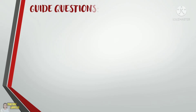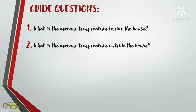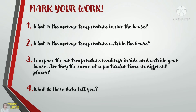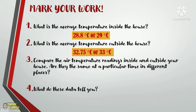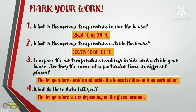Now, let us answer some of the guide questions of this activity. 1. What is the average temperature inside the house? 2. What is the average temperature outside the house? 3. Compare the air temperature readings inside and outside your house — are they the same at a particular time in different places? And 4. What do this data tell you? The answer for number 1 is 28.8 degrees Celsius or 29 degrees Celsius. For number 2, the answer is 32.75 degrees Celsius or 33 degrees Celsius. For number 3, the temperature outside and inside the house is different from each other. And for number 4, the temperature varies depending on the given location.